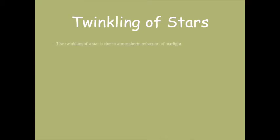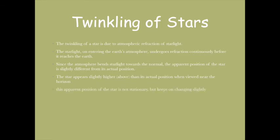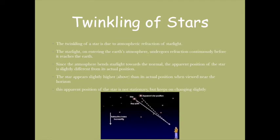The twinkling of a star is due to atmospheric refraction of starlight. The starlight on entering the Earth's atmosphere undergoes refraction continuously before it reaches Earth. Since the atmosphere bends the starlight towards the normal, the apparent position of the star is slightly different - the star appears slightly higher above its actual position. This apparent position is not stationary but keeps changing slightly, and this is why we see stars twinkling.